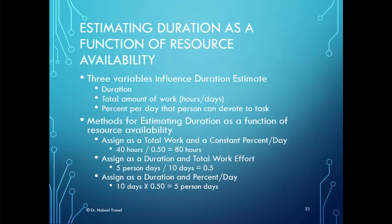There are three variables that influence duration estimates: the duration itself, the total amount of work hours or days, and the percent per day that a person can devote to the task. Methods for estimating duration as a function of resource availability include: assigning total work and a constant percent per day — for example, 40 hours divided by 0.5 gives 80 hours; assigning duration and total work effort — for example, five people working 10 days gives 50 percent effort per person per day; or assigning duration and percent per day — 10 days times a percentage tells you how many people are needed.